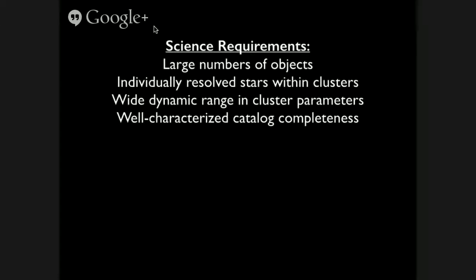With those science drivers in hand, we can come up with requirements for what we want out of this stellar cluster catalog. First, as big as possible — the more clusters we have for calibration, the better. We also really want clusters where we can individually resolve out single stars to get detailed information about how many particular stars are in these stellar clusters. For the mass function work and bound fraction work, we'd like a wide dynamic range in cluster parameters, especially being able to go down to lower masses. We also want the data set to be very well calibrated with systematic assessment of cluster completeness.